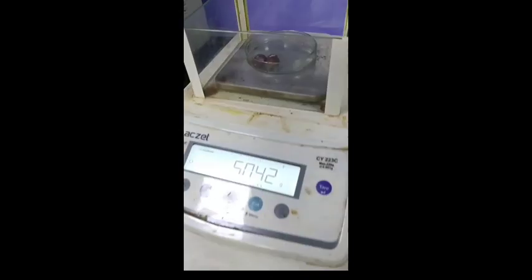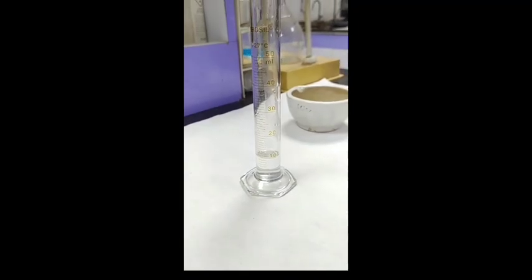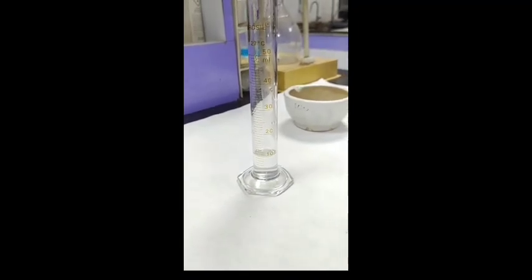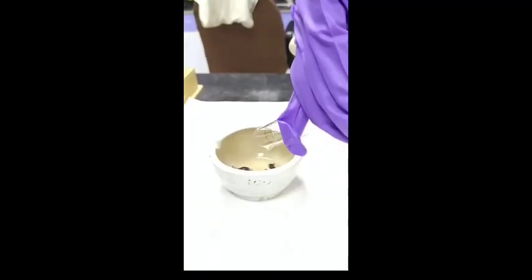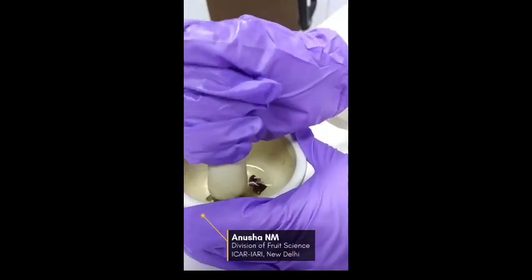For this we start by weighing 5 grams of samples. Then we measure 10 ml of 80% ethanol with the help of measuring cylinder. And then we add this to the sample in a pestle and crush it with the help of mortar.